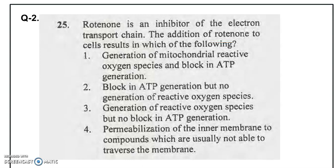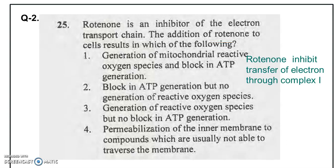Complex four is the cytochrome a-a3 complex. Rotenone inhibits complex one, and due to this inhibition, NADH electrons are not transported to the terminal oxygen. During aerobic respiration, the terminal electron acceptor is oxygen. Since there is a blocker at complex one, oxygen cannot accept the terminal electron. That is why free radicals or reactive oxygen species are generated, but ATP synthesis is blocked.